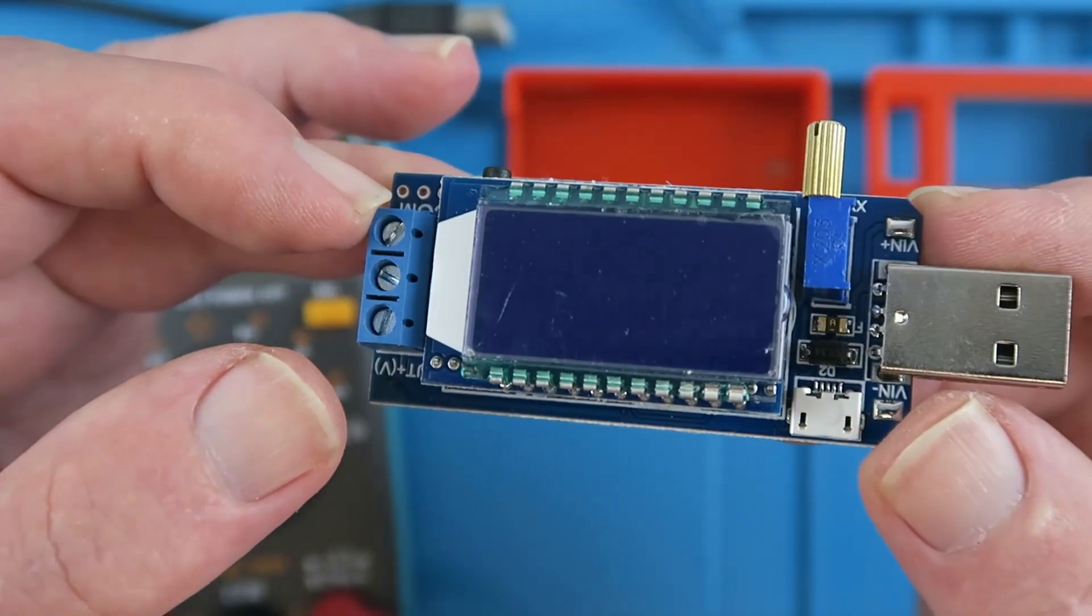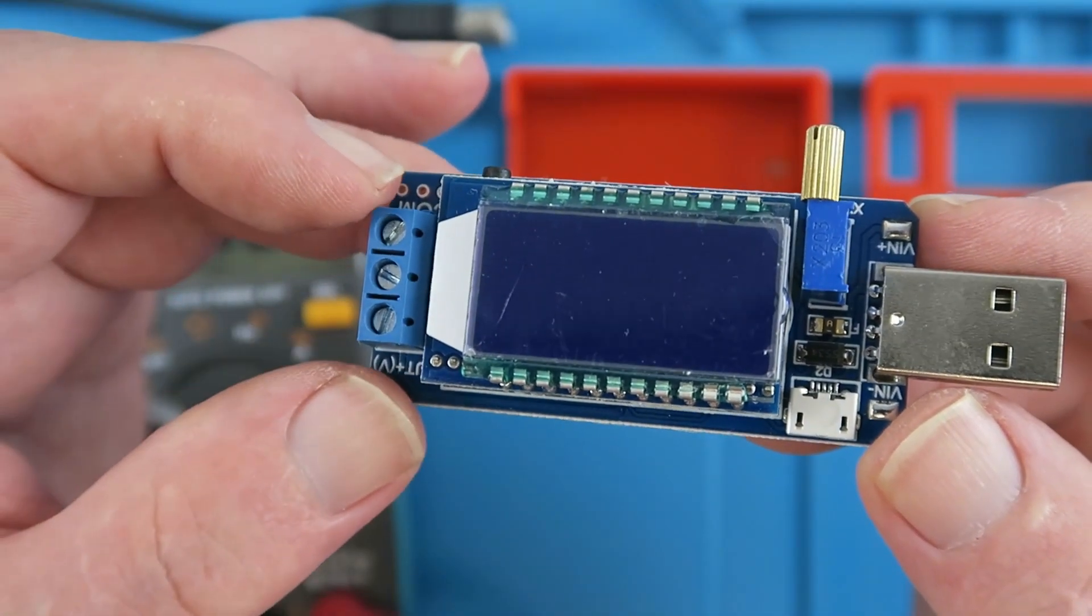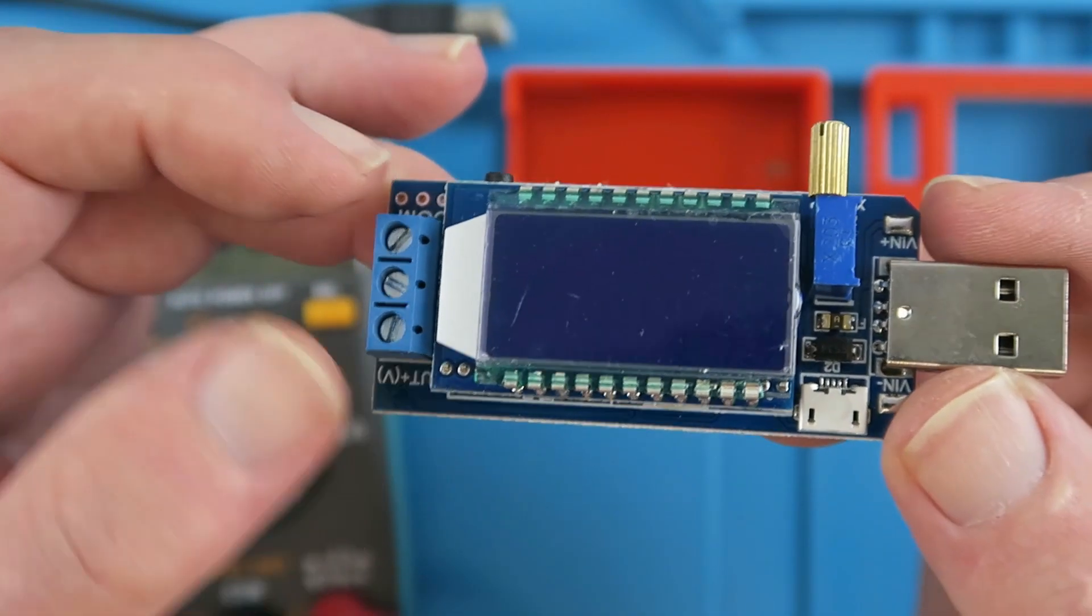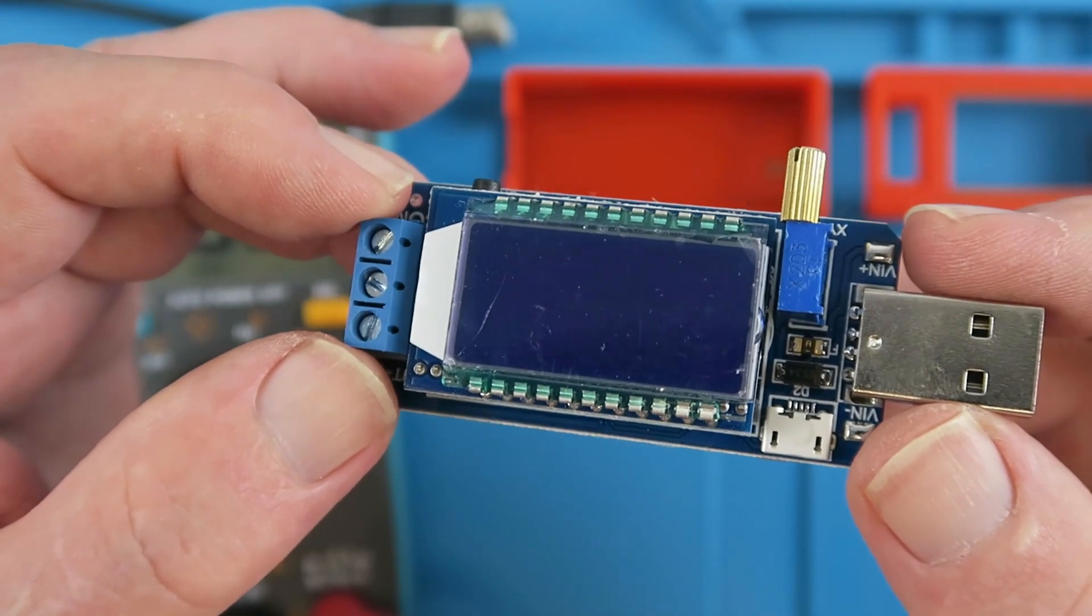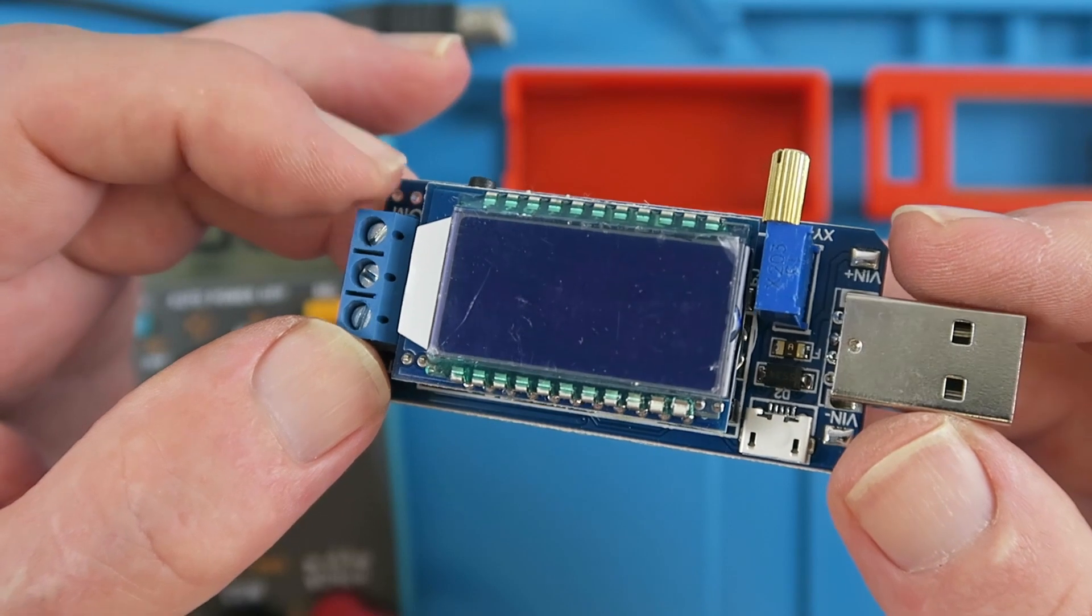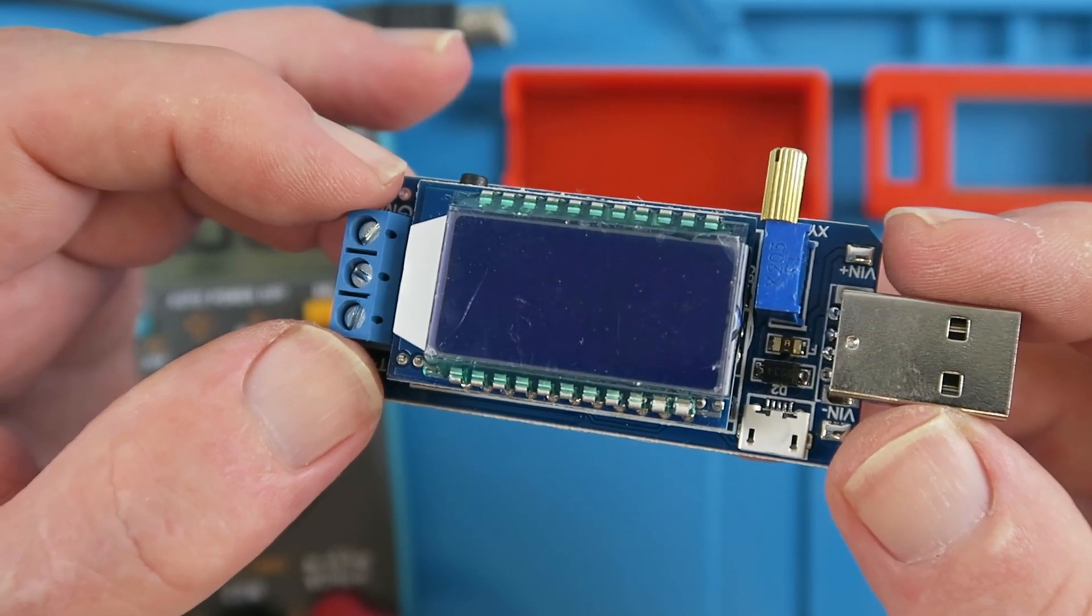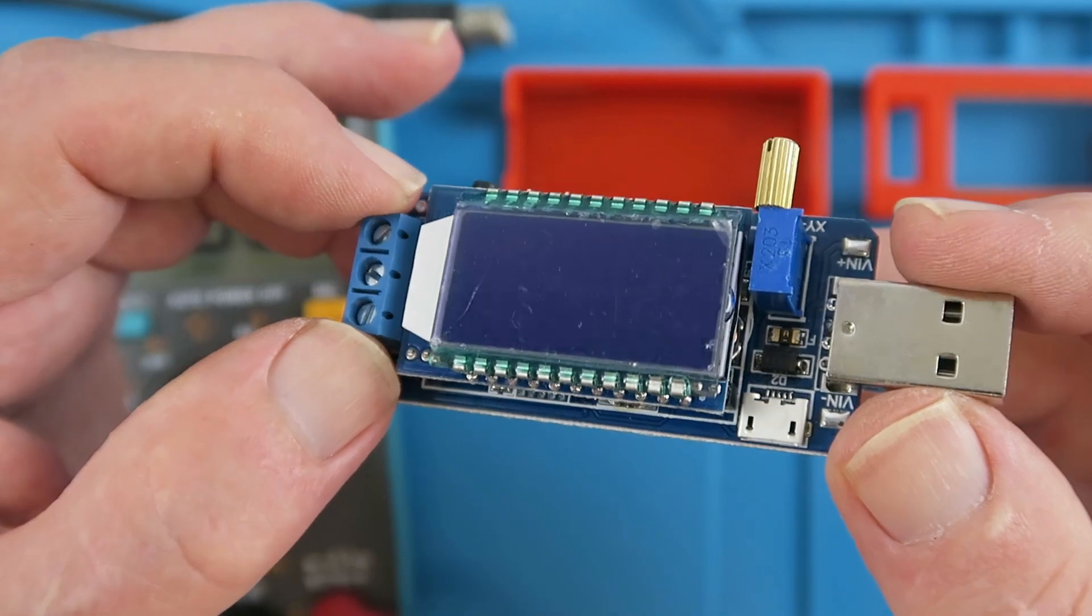The output is then adjustable from 1.2 volts to 24 volts at around 2 to 3 watts. Now that's not a huge amount of power, but it's certainly enough for most Arduino, ESP32, those sorts of projects.